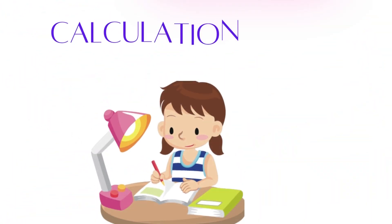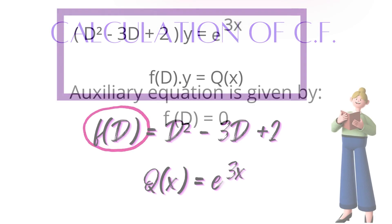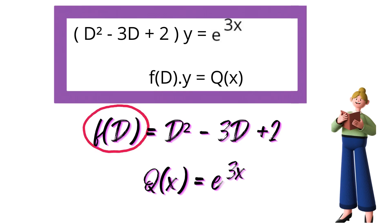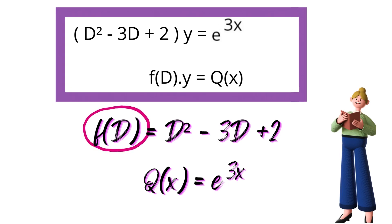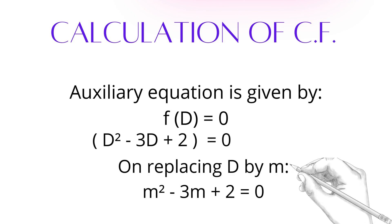To calculate the complementary function, we need to write the auxiliary equation. The auxiliary equation is obtained by equating f(D) to zero. So we put D² minus 3D plus 2 equal to zero — this is our auxiliary equation. We will solve it to obtain the roots, replacing capital D by small m, giving us m² minus 3m plus 2 equals zero.